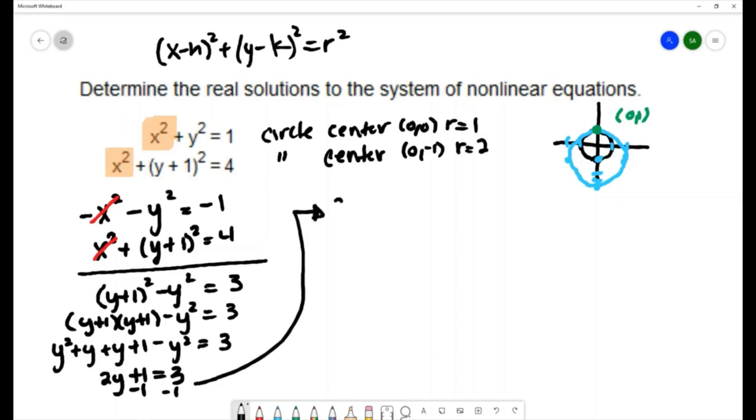Giving me two y equals two. Divide both sides by two to get y equals one. And that gives me the y coordinate of my solution. I need to get the x coordinate. I can do that by substituting.